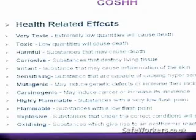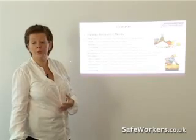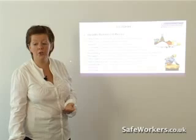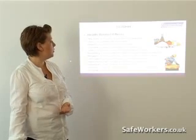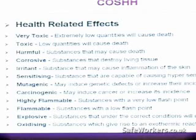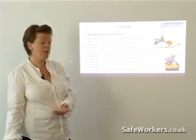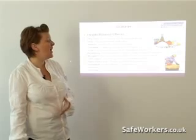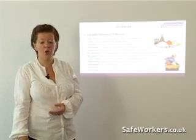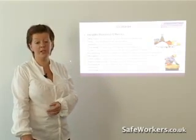Harmful — again, substances that may cause death. Corrosive is substances that can destroy living tissue. Irritant: substances that may cause inflammation of the skin, so it may just be a rash. Sensitising: substances that are capable of causing hypersensitisation.